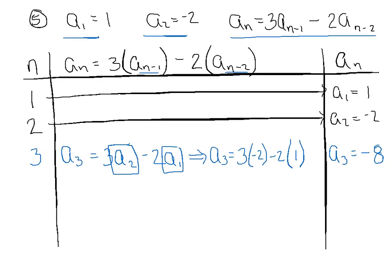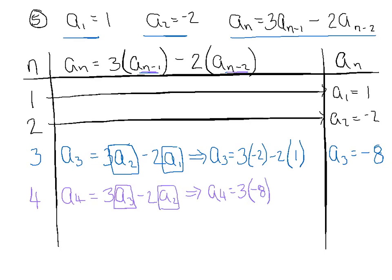A sub 3 equals 3 times a sub 2 minus a sub 1 — doing 3 minus 1 in our head to get the subscript 2, and 3 minus 2 to get subscript 1. A sub 3 is really 3 times negative 2 minus 1, which gives negative 6 minus 2, so a sub 3 equals negative 8. Now substitute n equals 4: a sub 4 equals 3 times a sub 3 minus 2 times a sub 2. That implies a sub 4 is really 3 times negative 8 minus 2 times negative 2, which is negative 24 plus 4, giving a sub 4 equals negative 20.